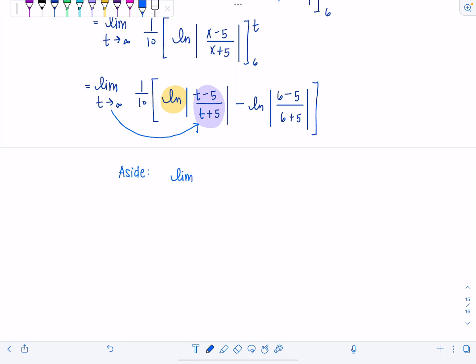So the limit as t approaches infinity. I don't need the absolute value because we're approaching positive infinity. So we've got t minus 5 over t plus 5. If I divide numerator and denominator by t, like we should when we have limits to infinity, we'll have 1 minus 5 over t over 1 plus 5 over t. Both these 5 over t's go to 0, and so this limit ends up being 1.